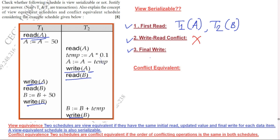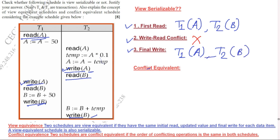Now check for the final write. The final write on B is made by T2 and the final write on A is made by T1. So the sequences are: T1 makes final write on A, and T2 makes final write on B.